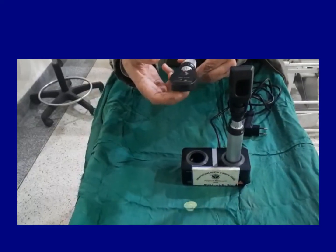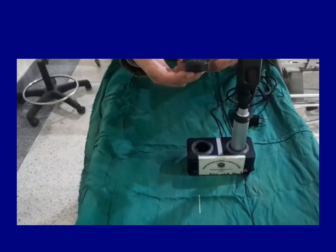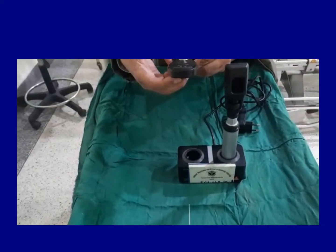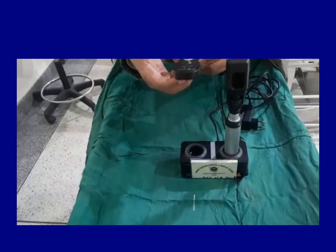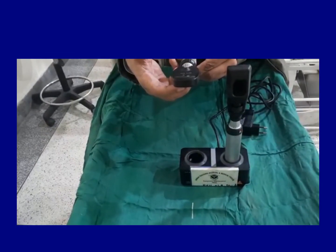Then it has got another thing in it, which is called slit. Slit is used if the lesion is raised in the retina, then the slit will be distorted. Like you can see here, the slit is straight and when I move it on the ridge here, it becomes distorted. So it can show the elevations in the retina.